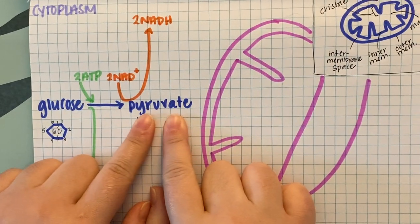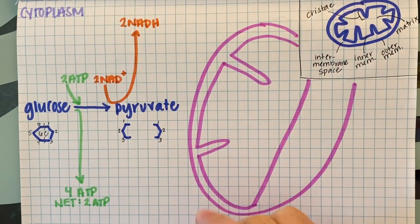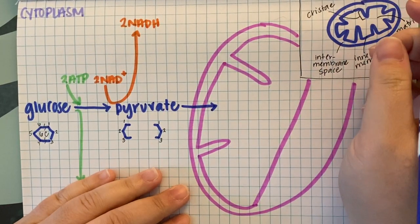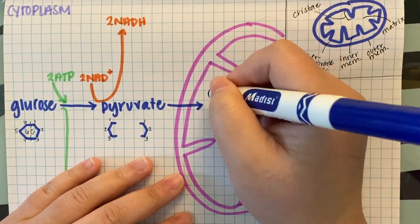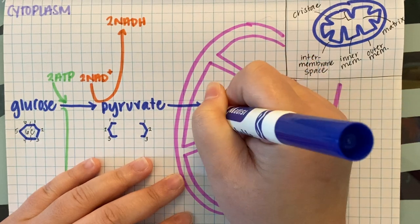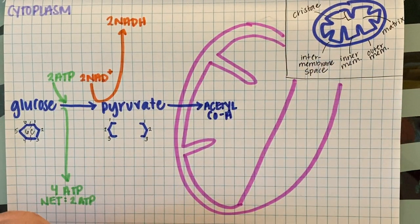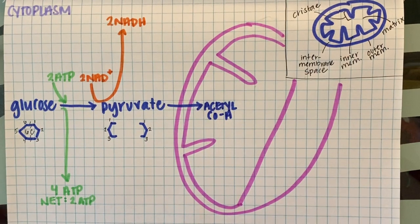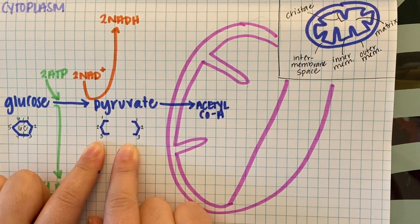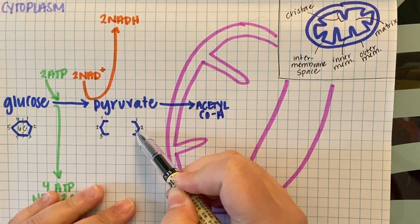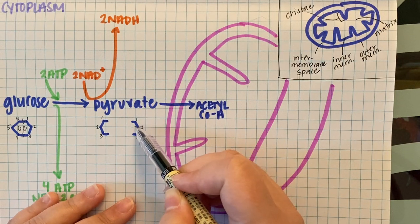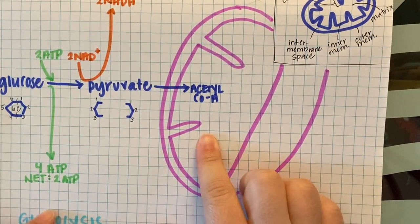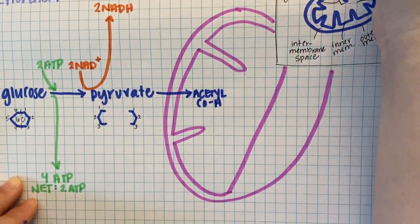Once we have pyruvates, they diffuse into the matrix. There, a series of reactions called the link reaction — also called pyruvate oxidation — converts pyruvate into acetyl-CoA. We're still tracking our carbons: we started with six, still have six in two pyruvates, and as we break more bonds we'll release those shared electrons.